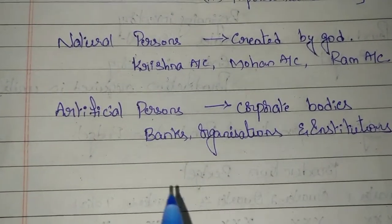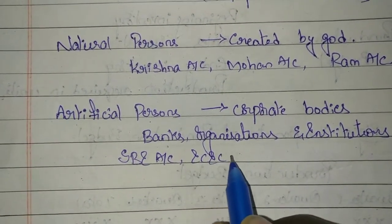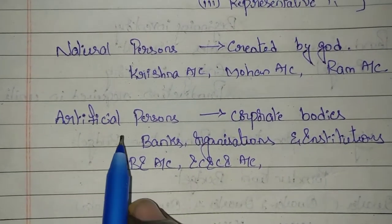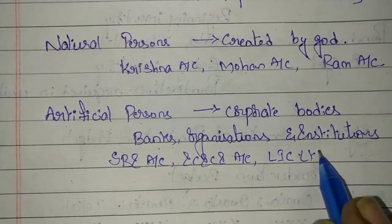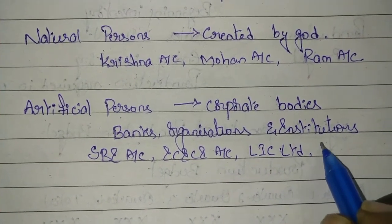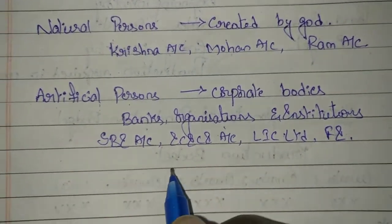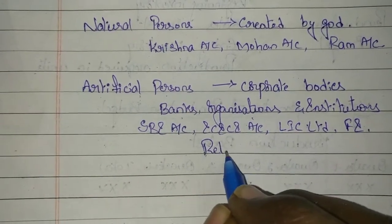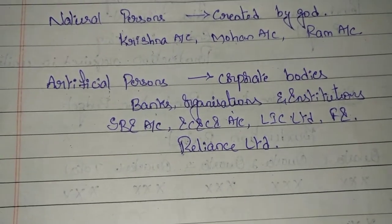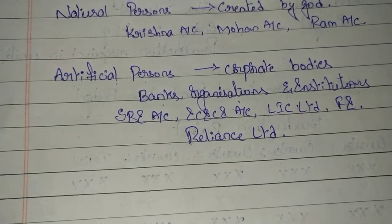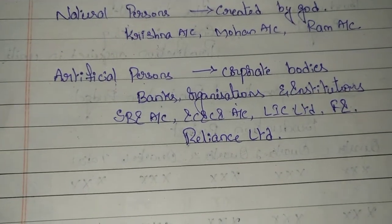When you are having transactions related to banks — like SBI account or ICICI account — those are considered artificial persons. Transactions related to institutions like LIC (Life Insurance Corporation) and other financial institutions also fall under artificial persons. Business organizations like Reliance Limited are also artificial persons, which are the corporate bodies.